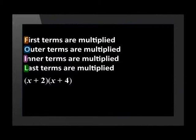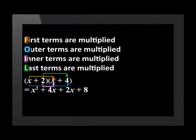It simply gives us the order in which to multiply the terms. The first terms of each bracket are multiplied by each other. The outer terms of each bracket are multiplied by each other. The inner terms are multiplied by each other. And the last terms of each bracket are multiplied together. If we can, we would then add any like terms.